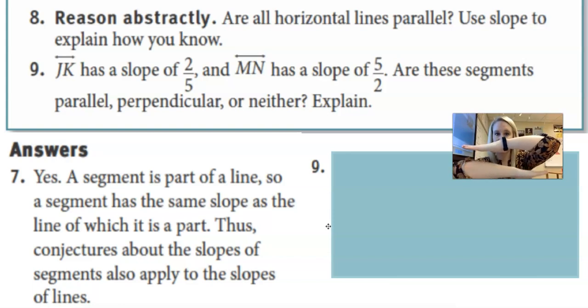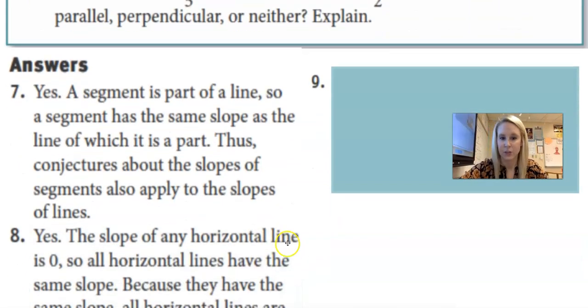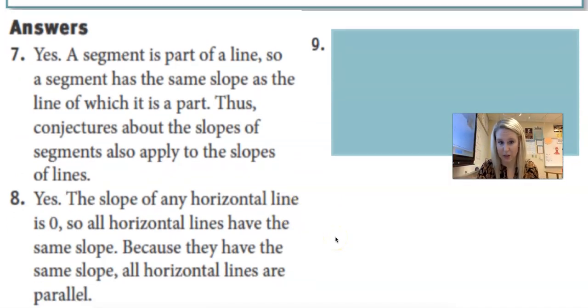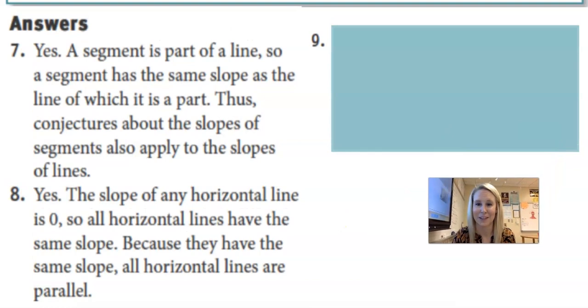Number eight. Are all horizontal lines parallel? So horizontal lines are this. Use slope to explain how you know. So yes, the slope of any horizontal line is zero. So all horizontal lines have the same slope. And because they have the same slope, they are parallel.